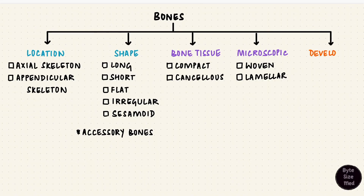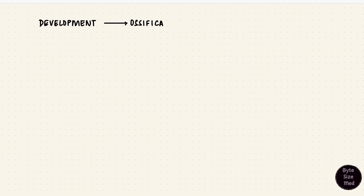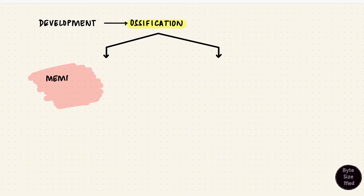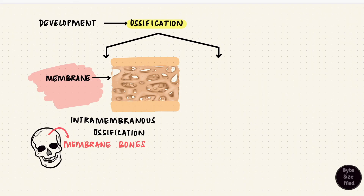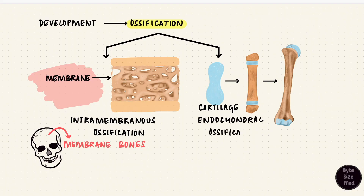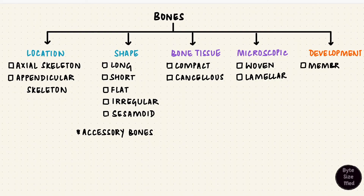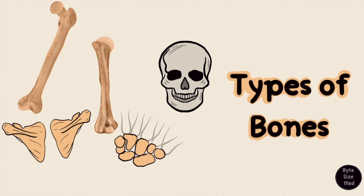Bone develops by a process called ossification, which can happen in two ways. Either bone forms directly from a mesenchymal condensation that forms a membrane — that process is called intramembranous ossification, and those bones are called membrane bones, like the bones of the skull vault. Or they can form from a cartilaginous template — this is called endochondral ossification, and those bones are called cartilage bones. Most bones of the body, like the long bones — the humerus and the femur — are cartilage bones.